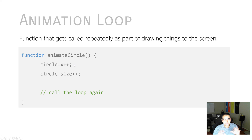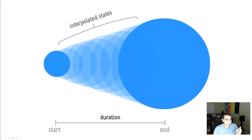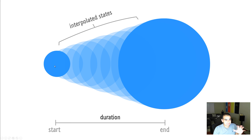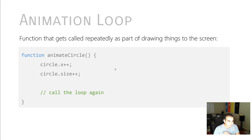If this function is called just once, you would not really notice anything — the circle moving one pixel to the right and one pixel in size isn't really going to be visible. But if this function gets called over and over again over a period of time, you can slowly see how the values for x and size, as they get larger, can start to mimic the path that the circle takes to get to its final state. The key, though, is calling this function repeatedly.